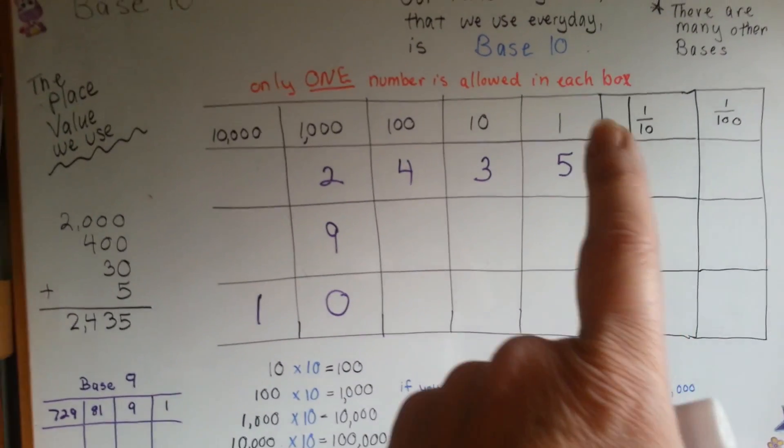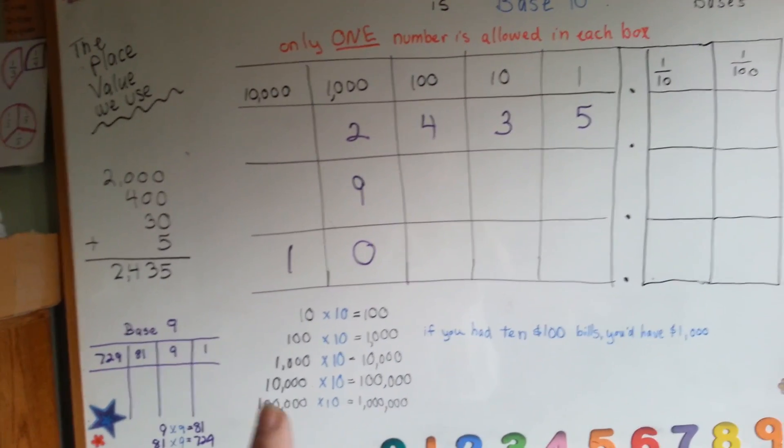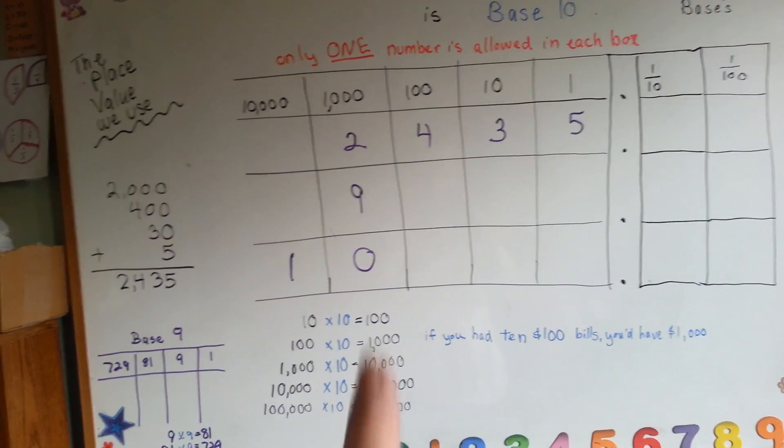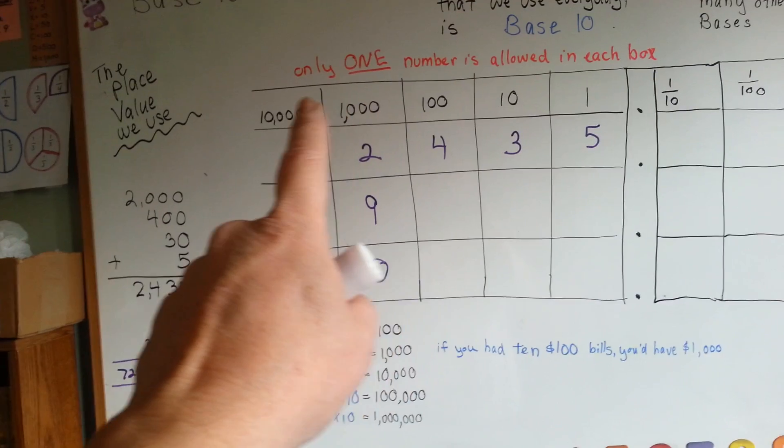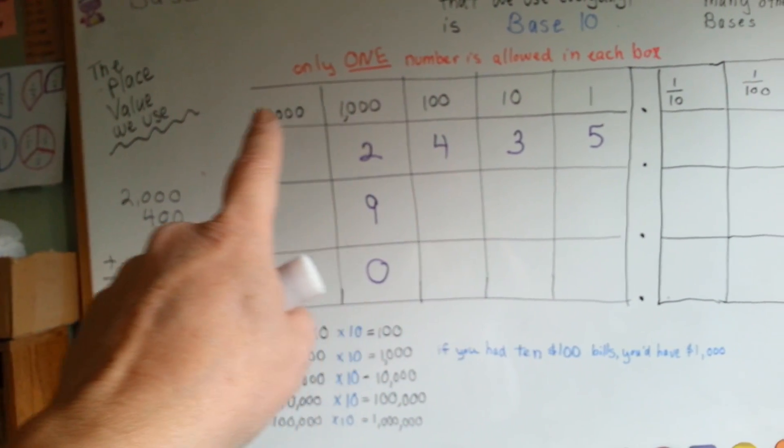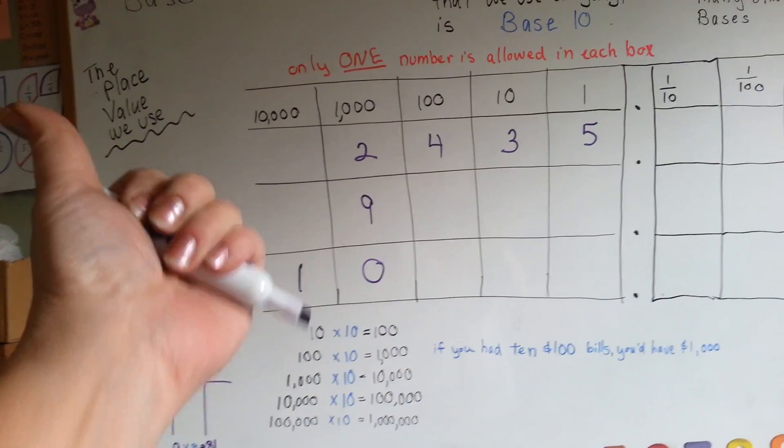One number in each box. You multiply it by ten. Ten thousand times ten is a hundred thousand. A hundred thousand times ten is a million. And that's how you know what goes up here. In this row up here, is that each one is multiplied by ten, heading off to the left.